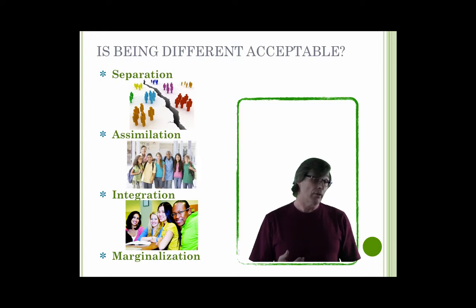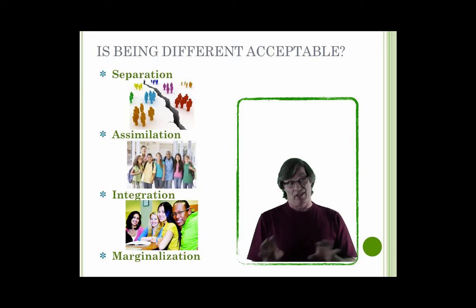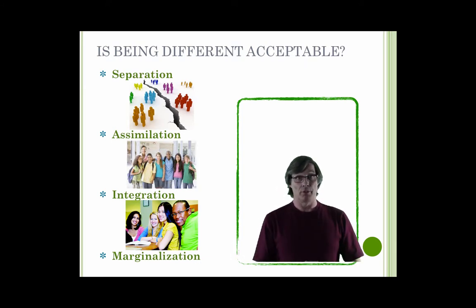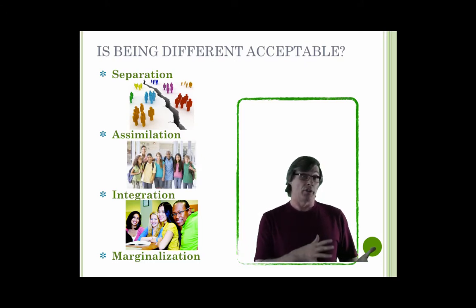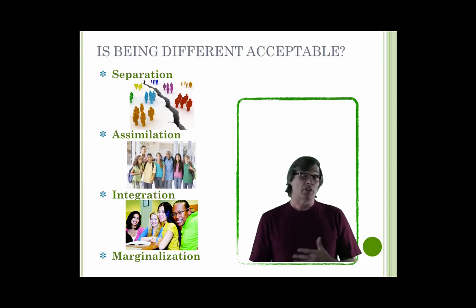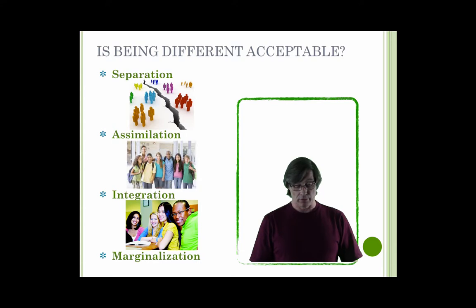Separation can be either voluntary or involuntary. It's where the dominant culture often makes the decision and separates people into groups. This happened historically with Japanese and Chinese immigrants in the early 19th century, and more recently we saw it with many Muslims throughout North America, particularly after September 11, 2001.